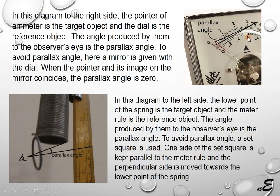Here there is an ammeter. The pointer is the target object and the dial is the reference object. The pointer and the dial make an angle to the observer's eye, and this angle is called the parallax angle.